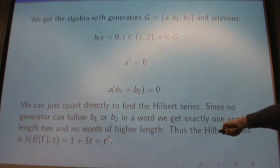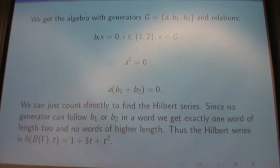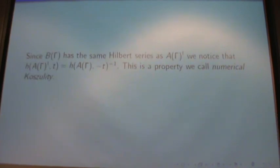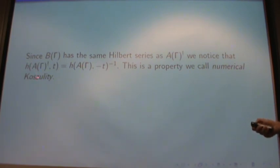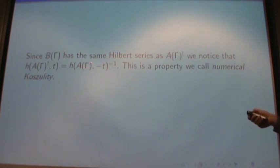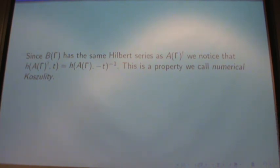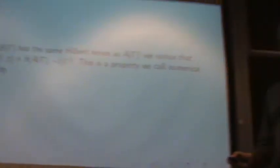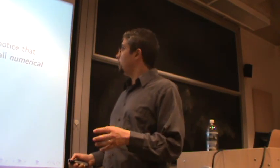So the Hilbert series of B_gamma for B2 is 1 + 3T + T^2. This should look familiar — it's 1 over the Hilbert series of A_gamma where T is replaced with −T. This is a very special property which we're going to call numerical Koszulity. Whenever the dual algebra's Hilbert series is given by 1 over the Hilbert series of the algebra where T is replaced with −T, we call that algebra numerically Koszul. This comes from the definition of Koszulity in homological algebra, but there's also a combinatorial definition involving a certain lattice being distributive.